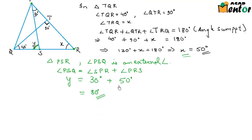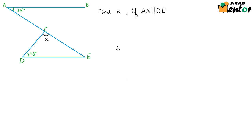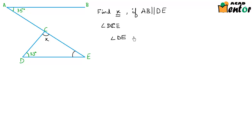Now let's look at another example. It says find x if AB is parallel to DE. X is right here. We are also given that angle BAC is equal to 35 degrees and angle CDE is equal to 53 degrees. Now to find the value of angle x, which is angle DCE, we need the value of angle DEC. If I have angle DEC, I already know angle CDE which is 53 degrees, and these three angles form the angles of triangle CDE.